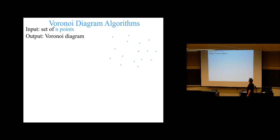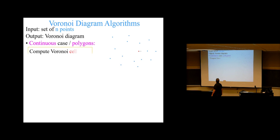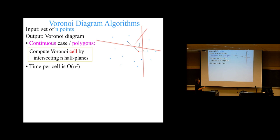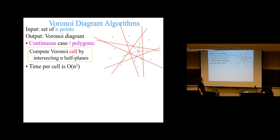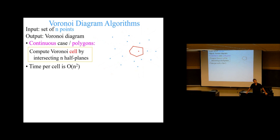The algorithm: you have a set of n points, you compute each Voronoi cell individually using perpendicular bisectors. You need to intersect the n half planes that result, giving you one Voronoi region, and repeat that n times. So the time per cell — how can you intersect n half planes in quadratic time? Pretty straightforwardly based on what we've already done, especially from the last lecture.